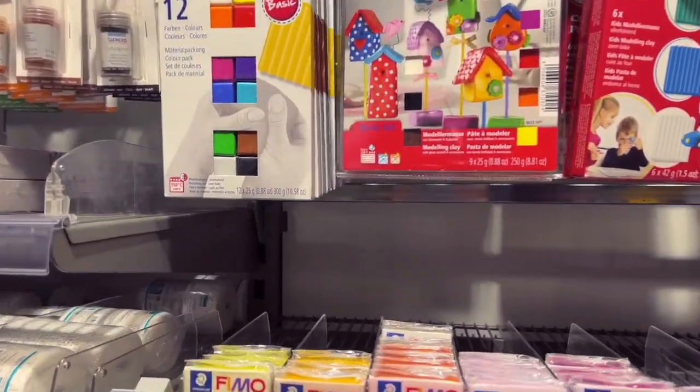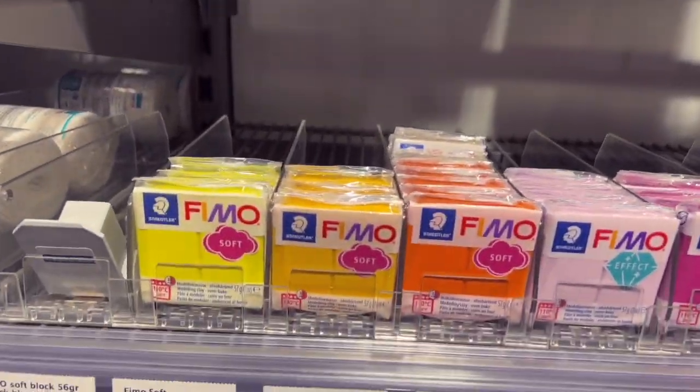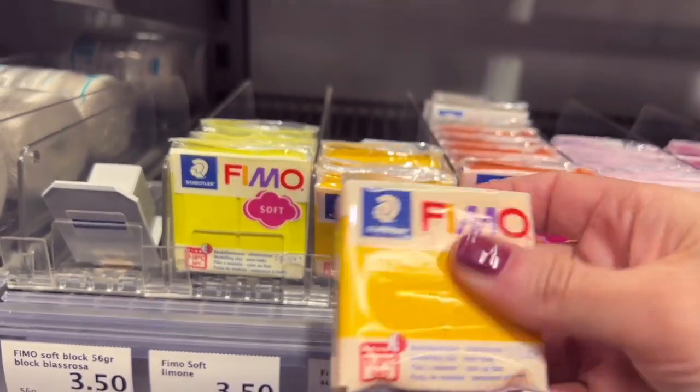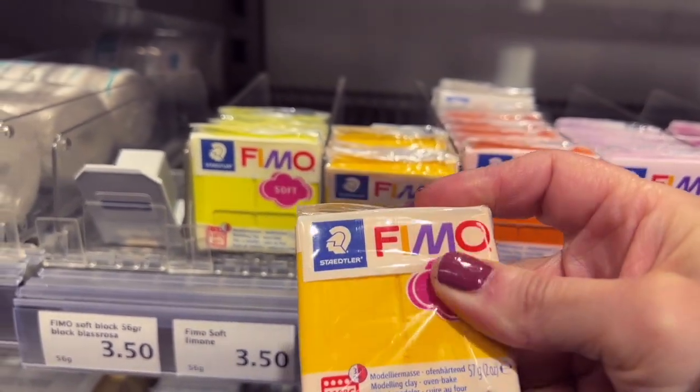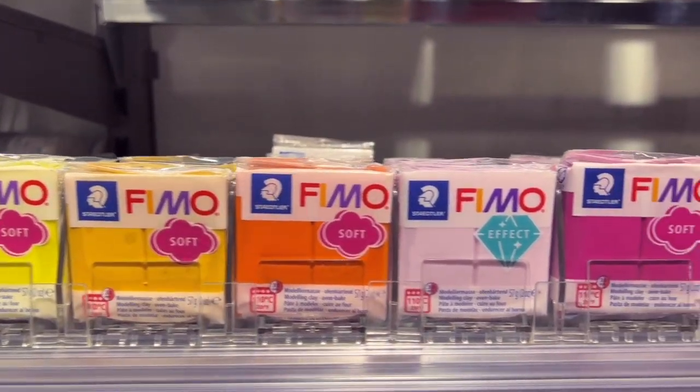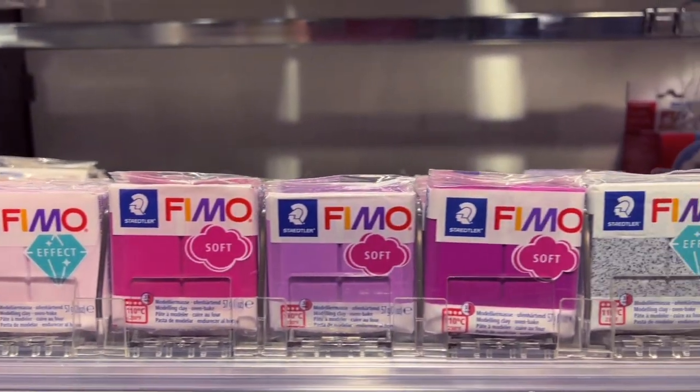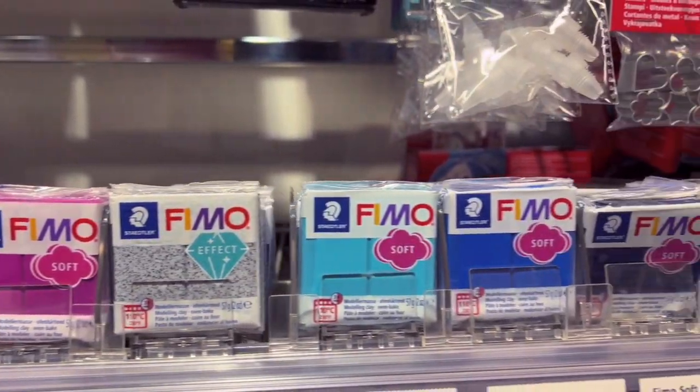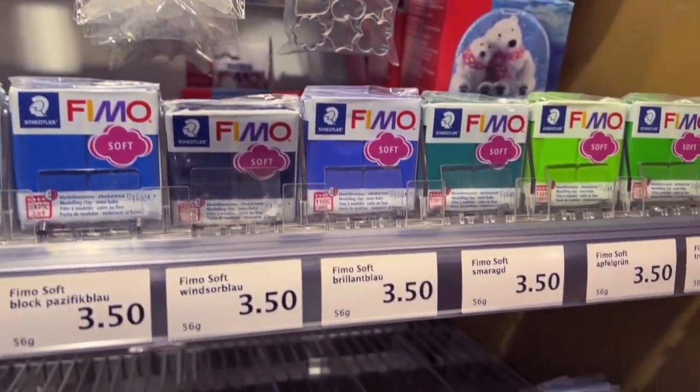We are at the craft department of a Swiss store because they have exactly what we need. Over here is a special polymer clay called Fimo that comes in many different colors and also special effects like glitter and glow in the dark, if for example someone wants to shower in the dark.